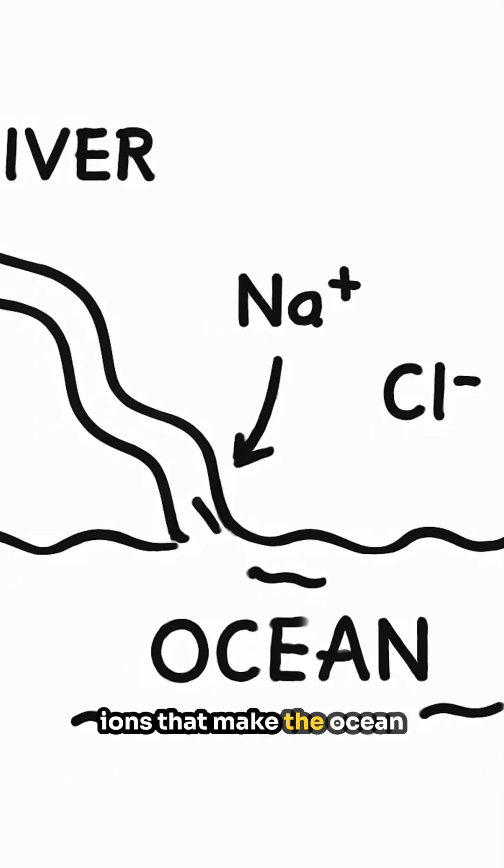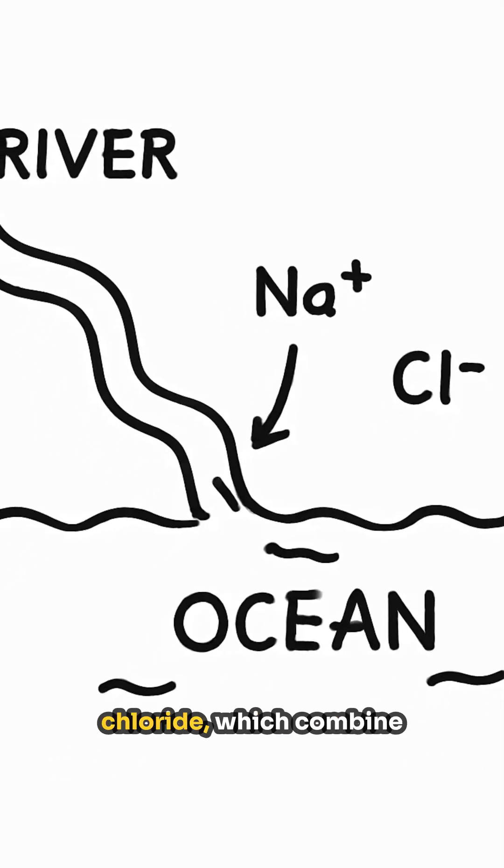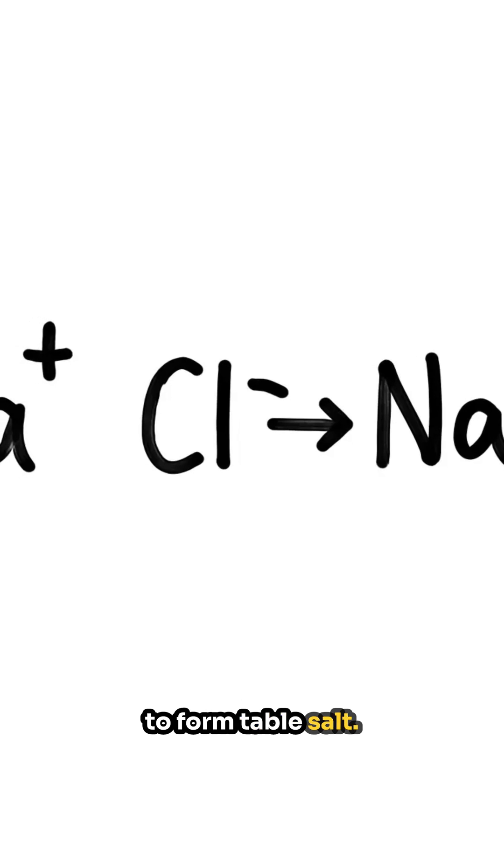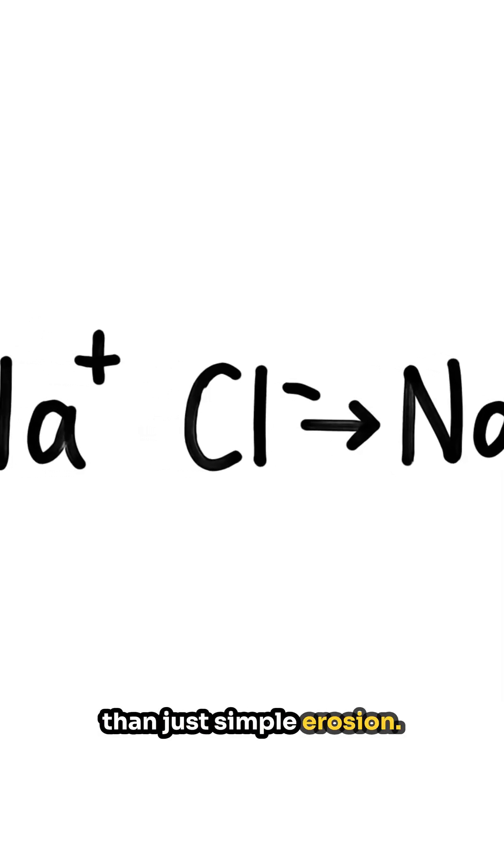Most of the dissolved ions that make the ocean salty are sodium and chloride, which combine to form table salt. But there's more to it than just simple erosion.